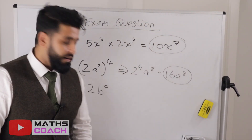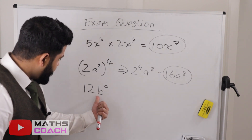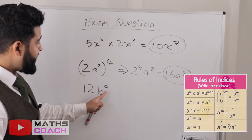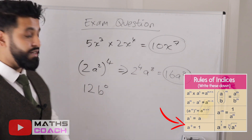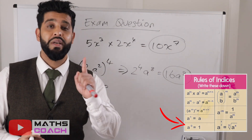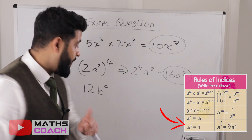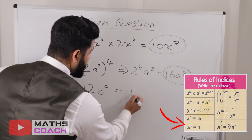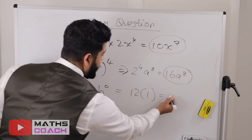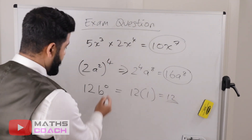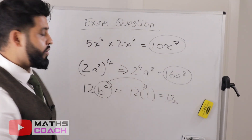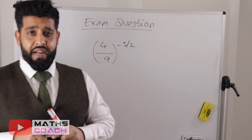Now b to the power of 0: anything to the power of 0 always equals 1. So here you have 12 times 1, which gives 12 as the answer.